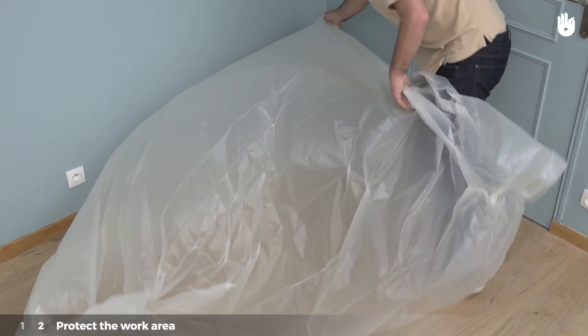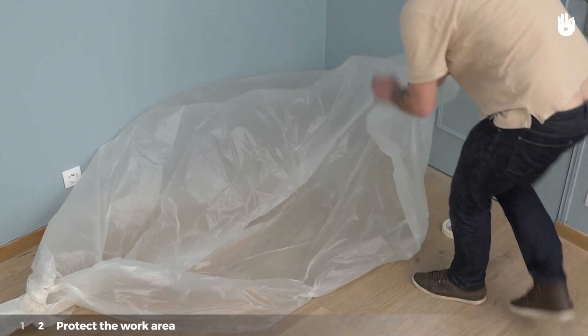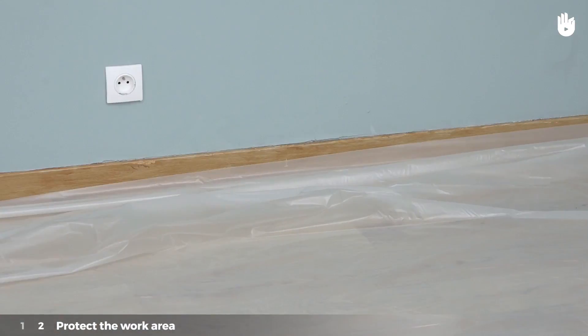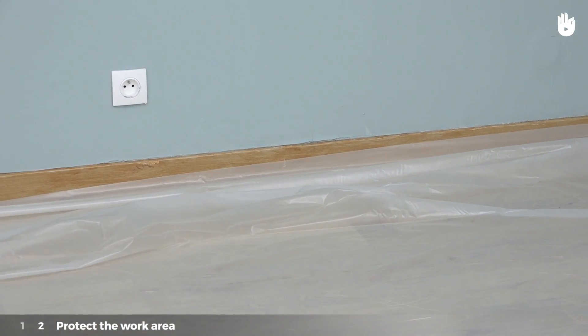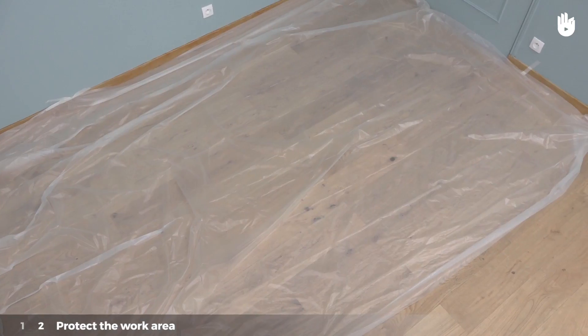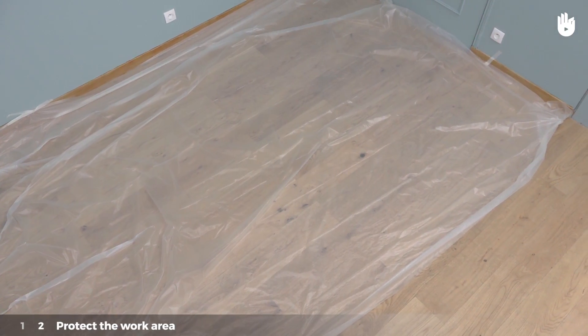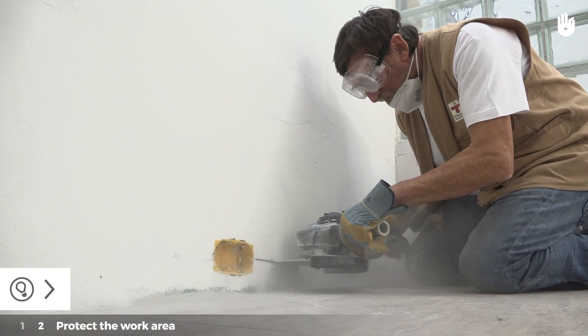Step 2. Protect the work area. Identify the areas to be protected from the electrical work. They may include walls, painted areas, floors or tiling. To protect these areas, use the tarpaulin and the masking tape.